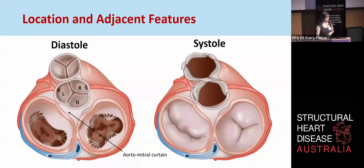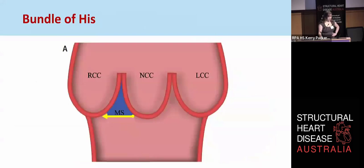Another important anatomical feature is the bundle of His, which runs just below the seam of the non-coronary and right coronary cusps. This can be damaged with any aortic intervention, both surgical or transcatheter, and can lead to complete heart block. Specifically, the bundle of His projects from the right atrium just below the non-coronary cusp and runs under the membranous septum before branching out below the right coronary cusp, just beneath the endocardium of the left ventricle. So it's quite prone to being damaged, and complete heart block is a risk of both surgical valve replacement and TAVI.